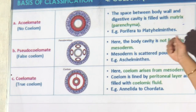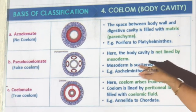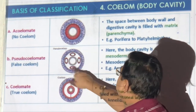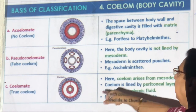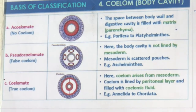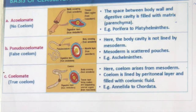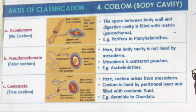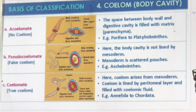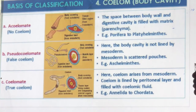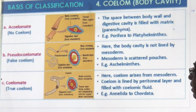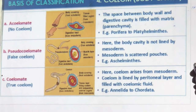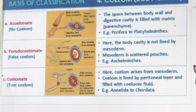So acoelomate — space is filled with matrix. Pseudocoelomate — mesoderm is present but the cavity is outside the mesoderm; round worms are an example. And true coelom — the cavity is between mesodermal layers. A true coelom means organ systems can be suspended, separate from each other, and can work independently. If I remove a coelom, you don't die — a heart can even be replaced.